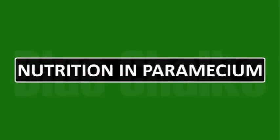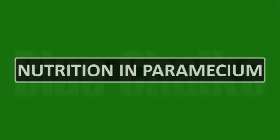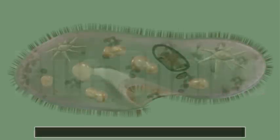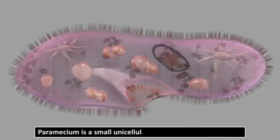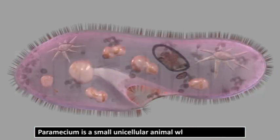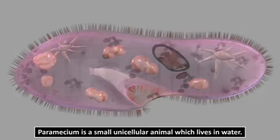To understand the concept of nutrition clearly, let us take up another lower organism, paramecium. Paramecium is a small unicellular animal which lives in water. Paramecium has small thin hair-like structures all over its body called cilia.